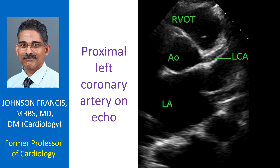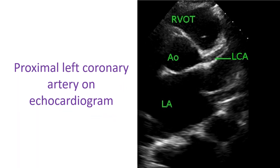In this case, the proximal left coronary artery is mildly dilated, possibly because of underlying valvular lesions with left ventricular dilatation and hypertrophy. Coronary arteries are relatively easier to image in children, while in adults the echo window is often not good enough for imaging coronary arteries by echocardiography.